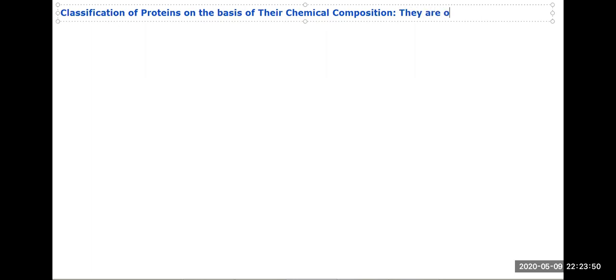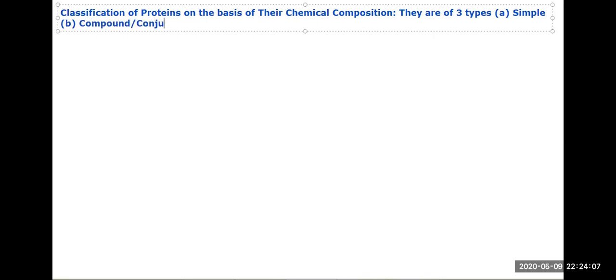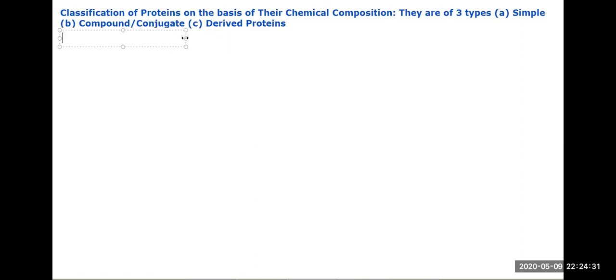They are of three types: first is simple, second is compound or conjugate, and third is derived proteins. Now first we will discuss what is simple proteins.